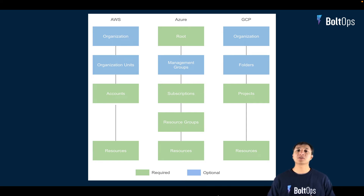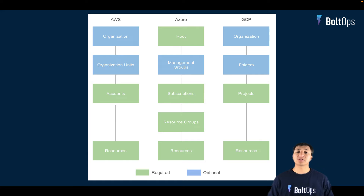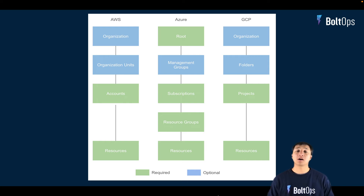So only Azure has this additional layer of resource groups, and there are some pros and cons with that. A lot of people going from AWS or Google to Azure initially think it's just one more thing to deal with. But then they realize that resource groups actually really nicely group all your resources together, so you can see everything belonging to an app or environment all together very clearly — and you can actually delete them all together too.